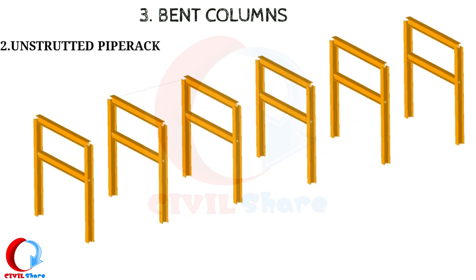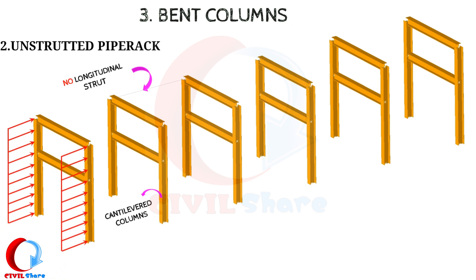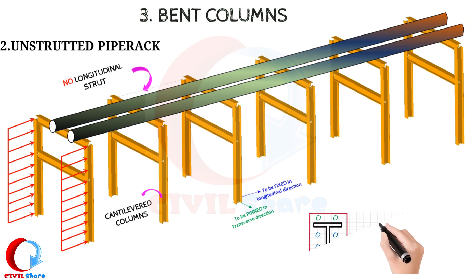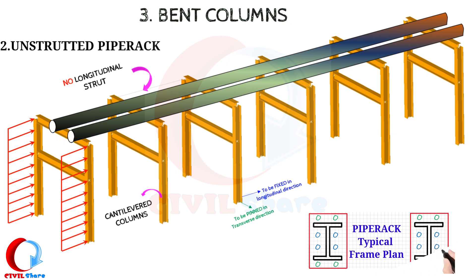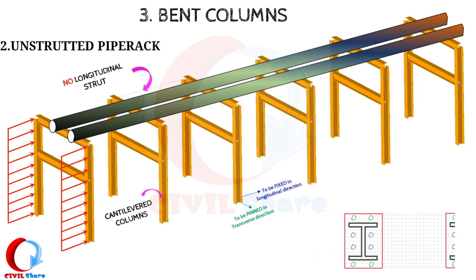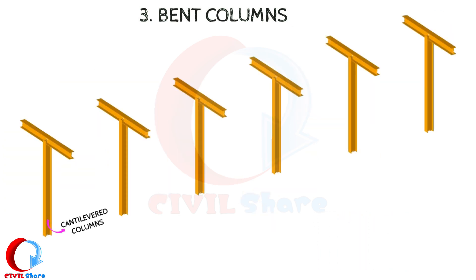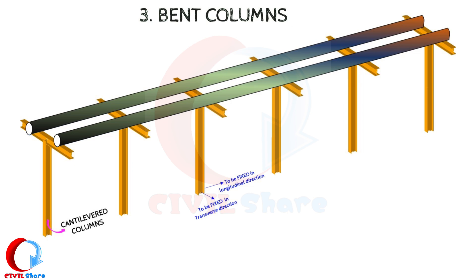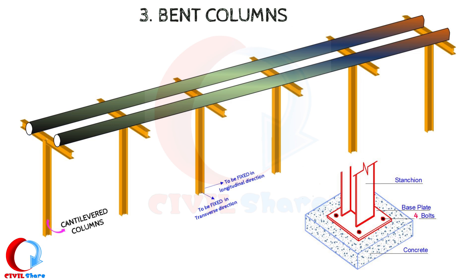Pipe racks without longitudinal struts are called unstrutted pipe racks. The columns act as cantilevers to resist lateral loads longitudinal to the pipe rack. For unstrutted pipe racks, columns shall be considered pinned in the transverse direction and fixed in the longitudinal direction. The major axis of columns should be perpendicular to the longitudinal direction. T-support column bases shall be considered fixed in both transverse and longitudinal directions, and the major axis may be turned in either direction. Column base plates for major, miscellaneous pipe racks and T-supports attached to concrete foundations shall be four-bolt base plates.